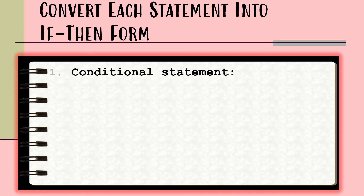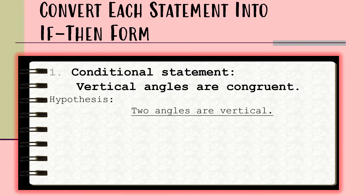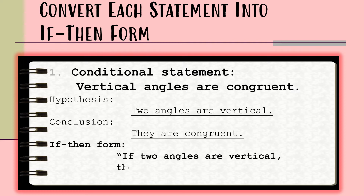We have the conditional statement: 'Vertical angles are congruent.' The hypothesis of the statement is 'two angles are vertical,' and the conclusion is 'they are congruent.' Therefore, combining these two statements using the words 'if' and 'then,' the if-then form is: 'If two angles are vertical, then they are congruent.'